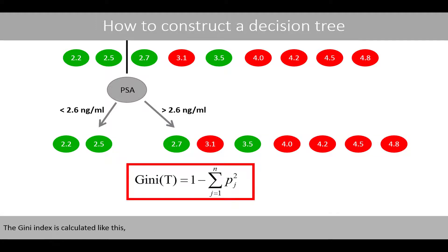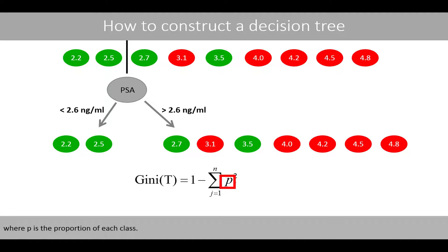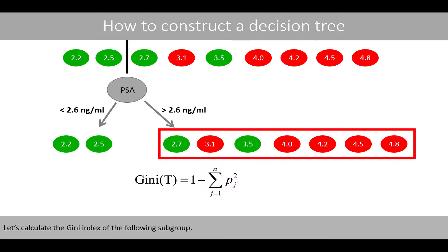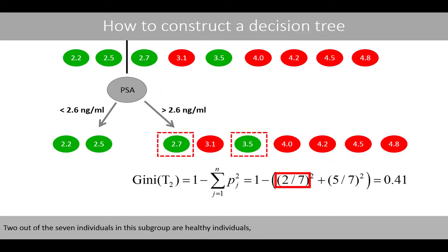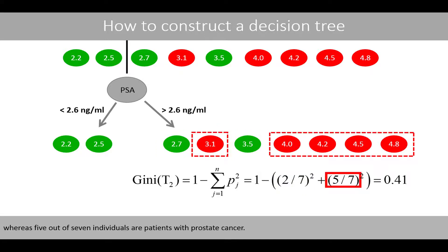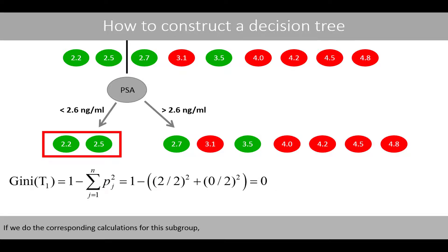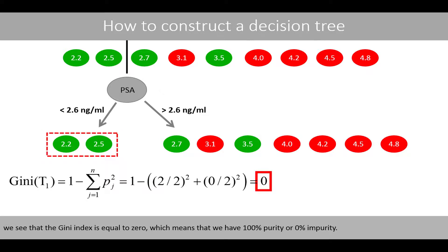The Gini index is calculated where p is the proportion of each class. Since we have two classes in this example — prostate cancer and healthy — we sum the squared proportions of these two classes. Let's calculate the Gini index of the following subgroup: two out of seven individuals in this subgroup are healthy, whereas five out of seven are patients with prostate cancer. This gives us a Gini index of about 0.41. For the corresponding subgroup, the Gini index is equal to zero, which means that we have 100% purity.